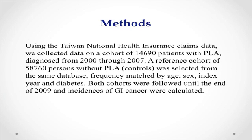A reference cohort of 58,760 persons without pyogenic abscess was selected from the same database, frequency matched by age, sex, index year, and diabetes mellitus. Both cohorts were followed until the end of 2009, and the incidence of GI cancer was calculated.